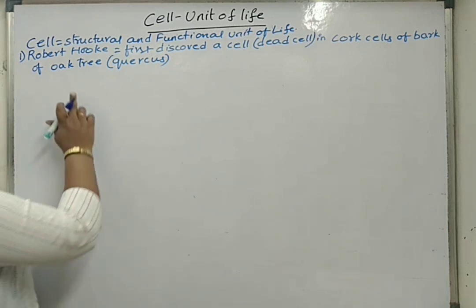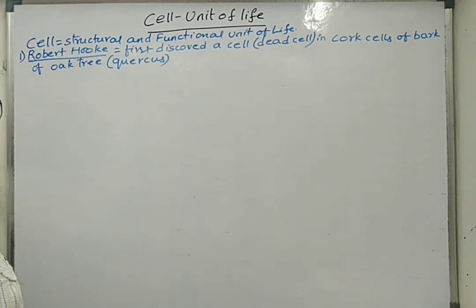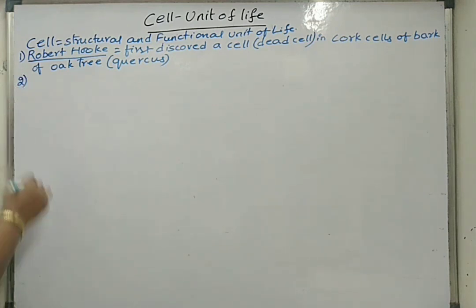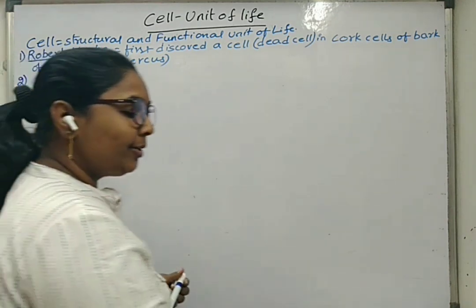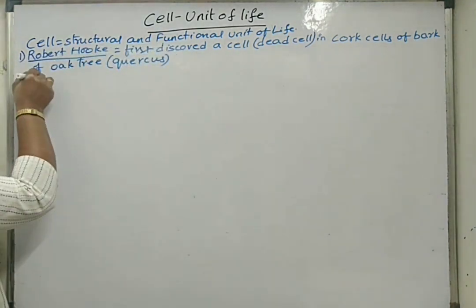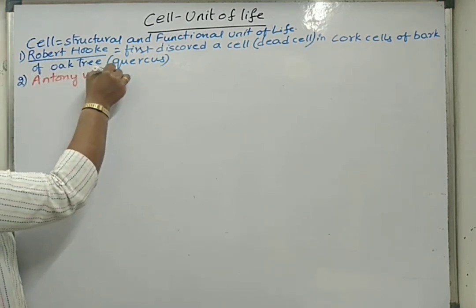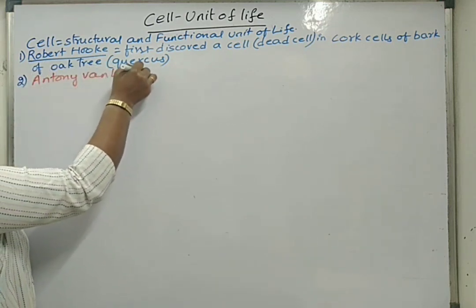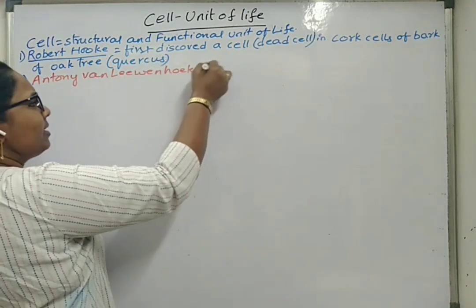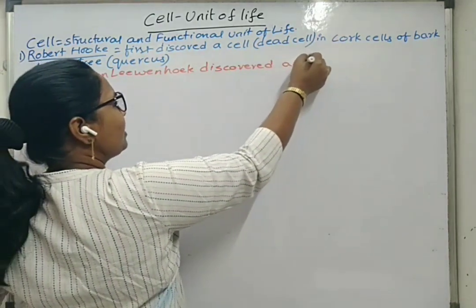This means that Robert Hooke did not discover a living cell — he discovered a dead cell. Then who is the person who discovered a living cell? Anthony Van Leeuwenhoek is the person who discovered a living cell.